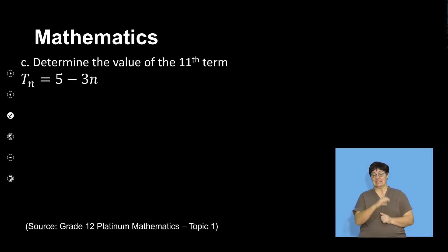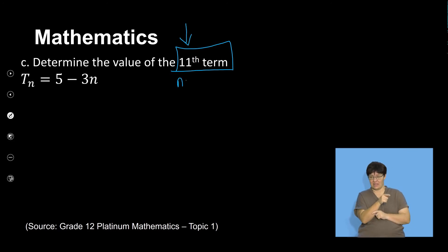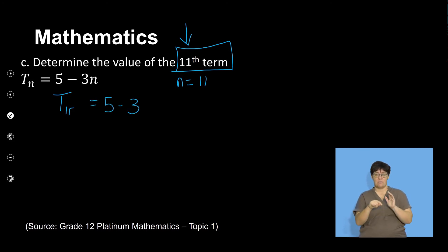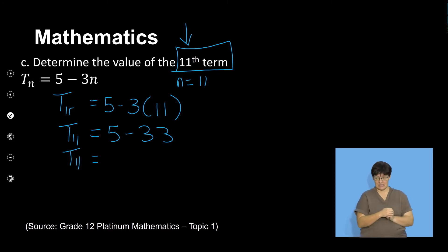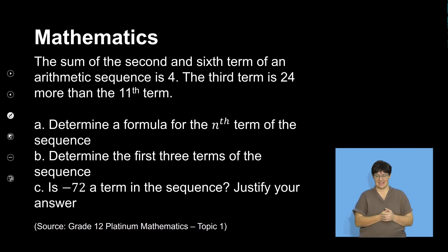We are now going to determine the value of the 11th term. Since I'm determining the value of the 11th term, I substitute n equals 11. T11 equals 5 minus 3 times 11, which equals 5 minus 33, giving term 11 a value of negative 28.